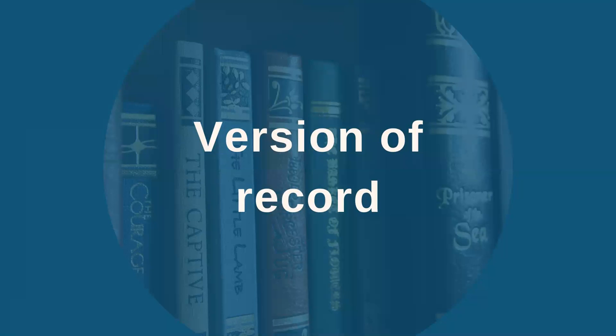The final published version of an article is often known as the version of record or VOR. This is the manuscript that most people will recognize as a journal article as it will have been laid out in the house style of the publication and will contain complete bibliographic information such as volume and issue number as well as full details of the publication.